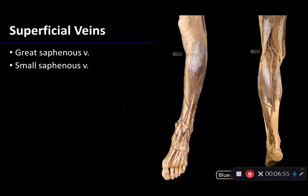The other superficial vein is the small saphenous vein, sometimes referred to as the lesser or short saphenous vein. It also arises from the dorsal venous arch and ascends the posterior aspect of the leg before diving deeply into the popliteal fossa to join the popliteal vein.